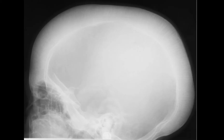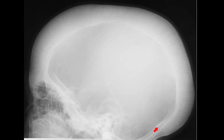This is a patient who has thalassemia. Here is the inner table, which is very clear and well demarcated. This is the diploic space, which is grossly expanded, and the outer table is thinned such that you can't see it very well. Note that the inner table and outer table are well seen at the occiput, and this is because there's a relative paucity of bone marrow in this region.